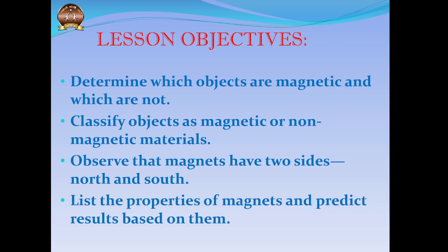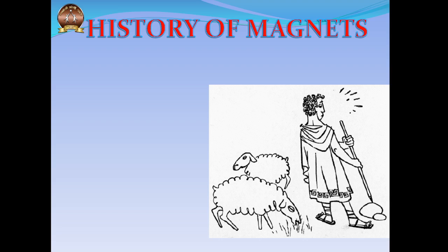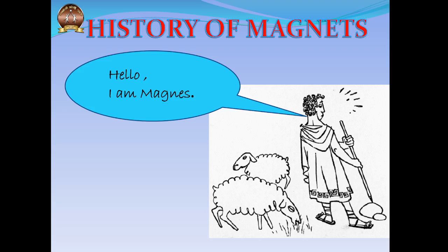You'll also be able to list the properties of magnets and predict results based on them. Every story has a beginning, so where were the first magnets discovered? The history of magnets is believed to have begun in Greece, from a person called Magnus.